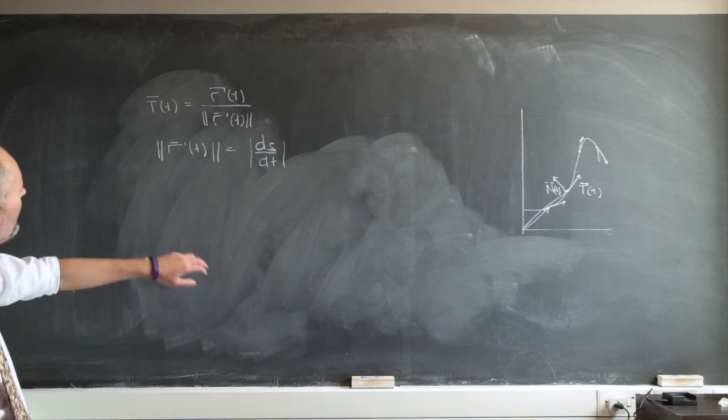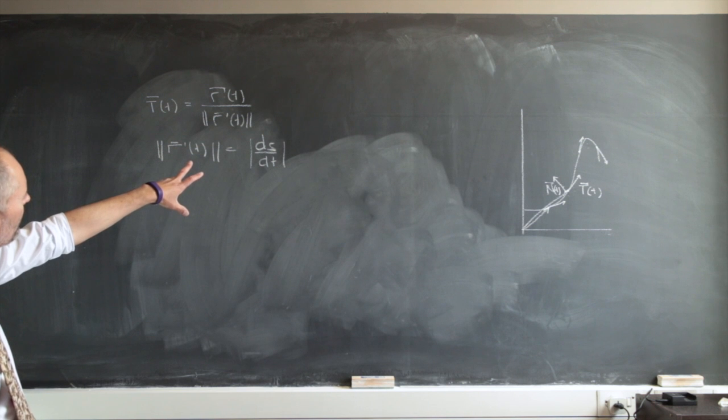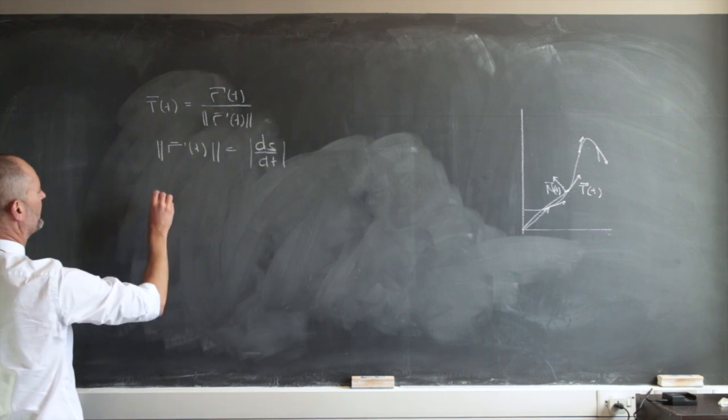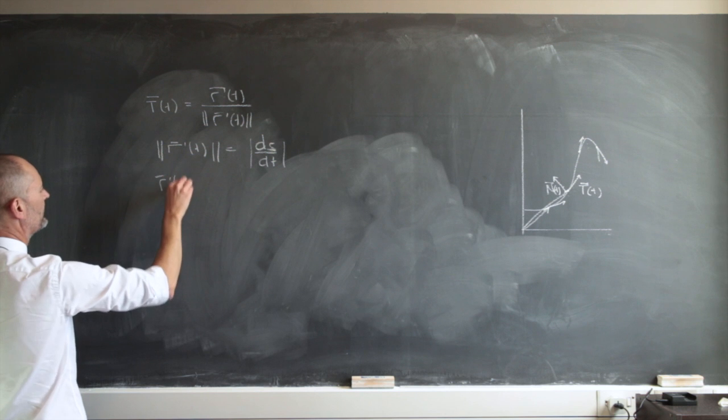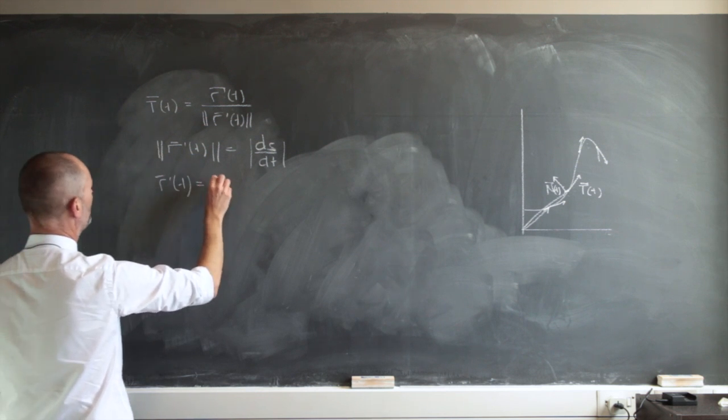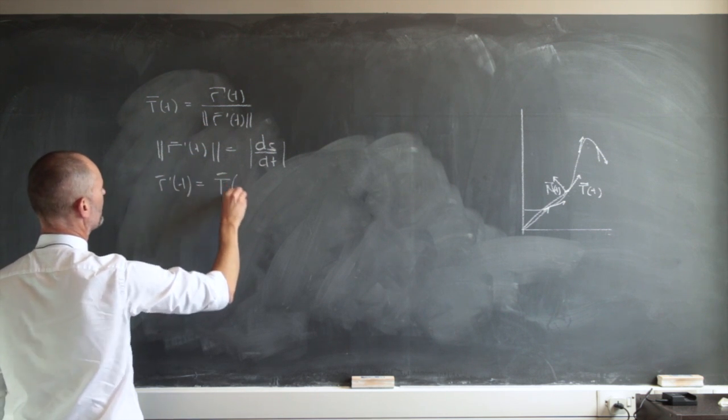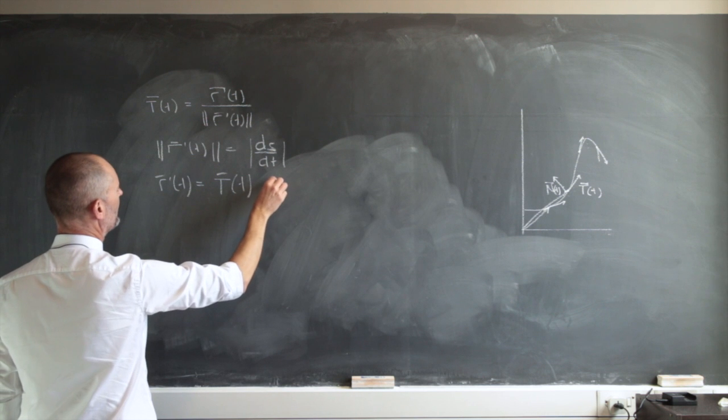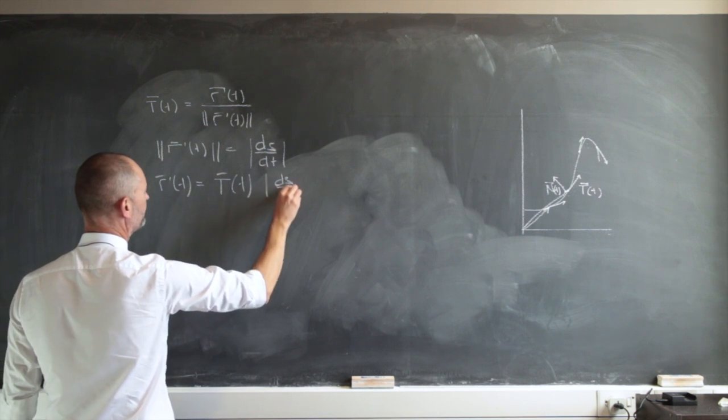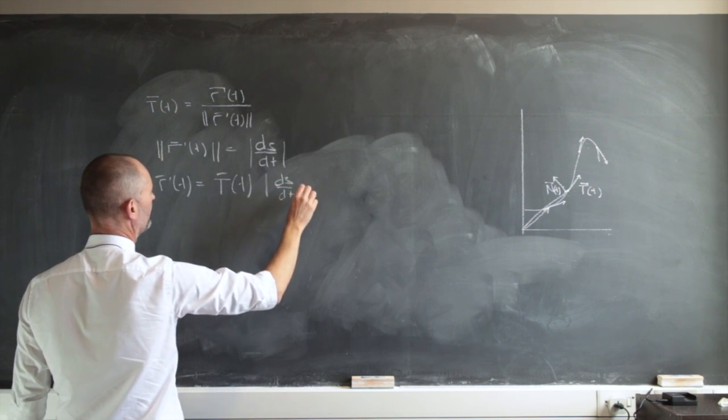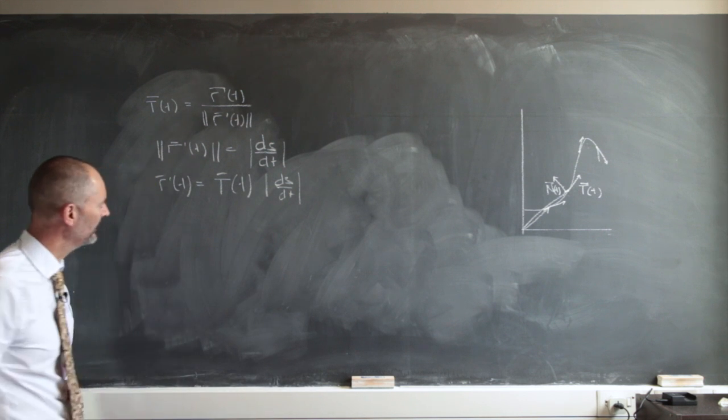And I can now just rewrite this just for now. Let's get the r prime of t. Let's just rewrite that. r prime of t. That is just going to be t times ds dt. That's what we have there for now.